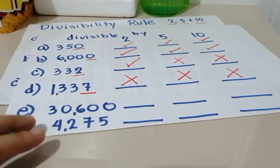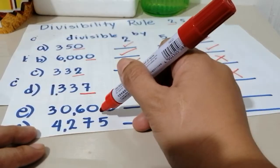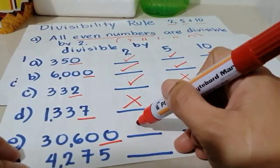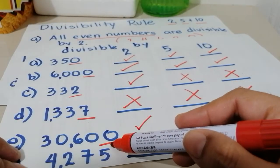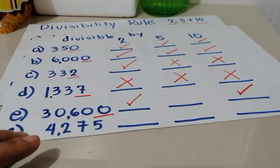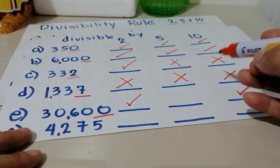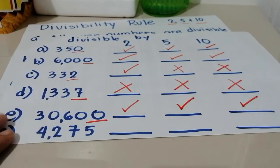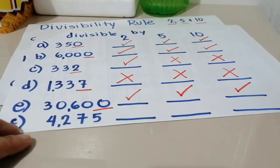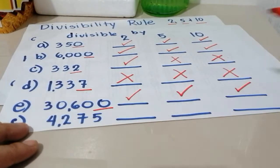Next is 30,600. What is the ones digit in 30,600? It's 0. At dahil 0 siya, divisible siya by 2 because 0 is an even number. At dahil nag-i-end siya sa 0, divisible agad siya by 10, because in order for a number to be divisible by 10, it should always end in 0. And since 0 siya, divisible din siya by 5, because the ones digit should always be 0 or 5. So 30,600 is divisible by 2, 5, and 10.